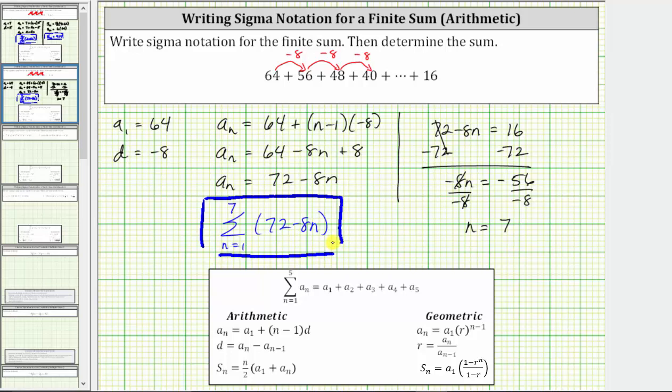The second part of the question asks us to determine the sum of the series. And because we have an arithmetic series, we can use the formula for S sub n to help us determine the sum. Because there are 7 terms in the series, the sum is equal to S sub 7.